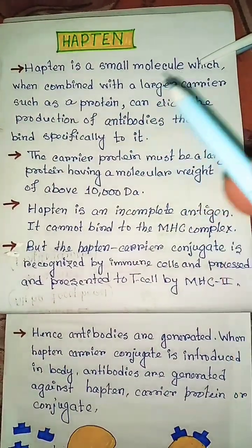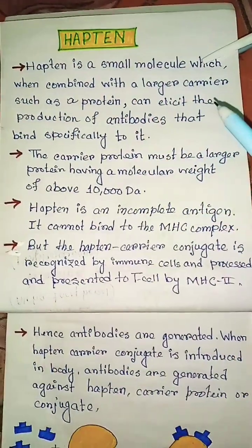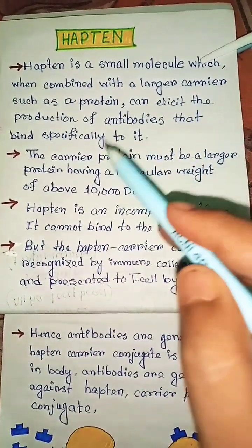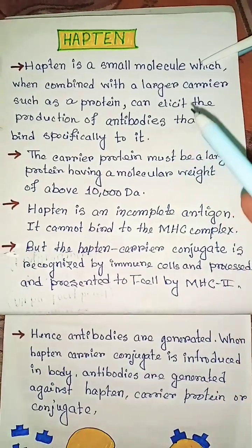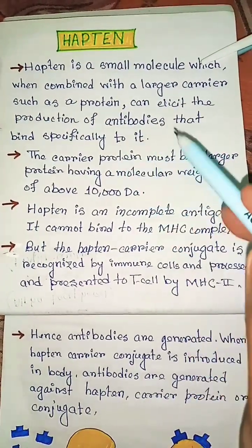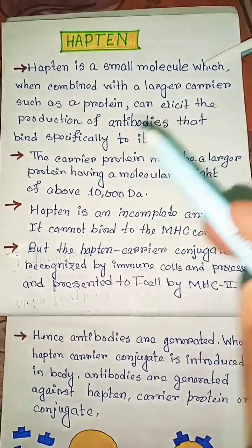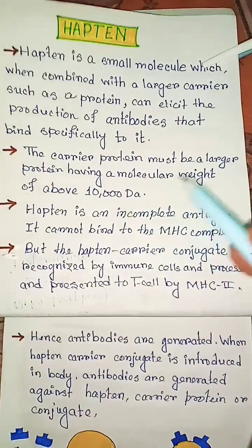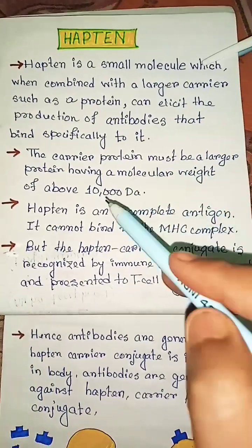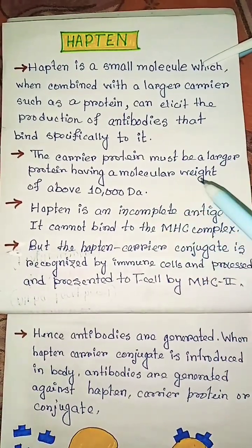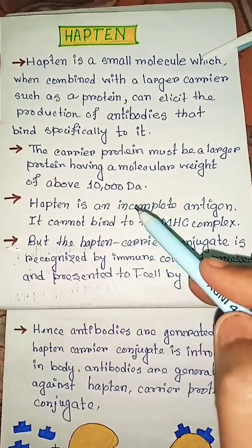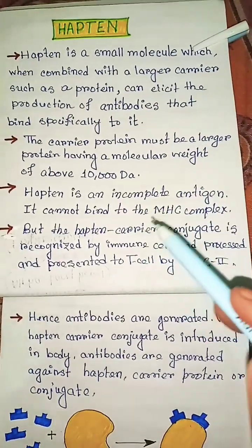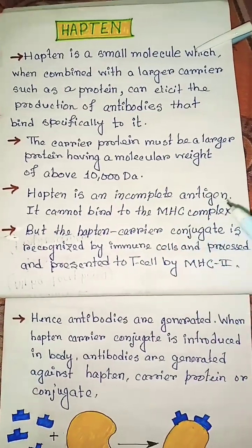What is a hapten? A hapten is a small molecule which, when combined with a larger carrier such as a protein, can elicit the production of antibodies that bind specifically to it. The carrier protein must be a larger protein having a molecular weight of above 10,000 Daltons. A hapten is an incomplete antigen.